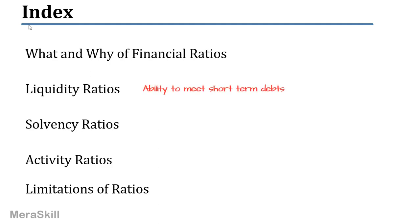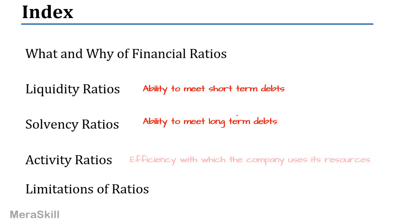We look at the liquidity ratios, which measure the firm's ability to meet short-term debts. We will go on to solvency ratios, which is the ability to meet long-term debts. This is a short-term solvency position and this is a long-term solvency position. We will look at activity ratios — the efficiency with which the company uses its resources. And we wind up with the limitations.